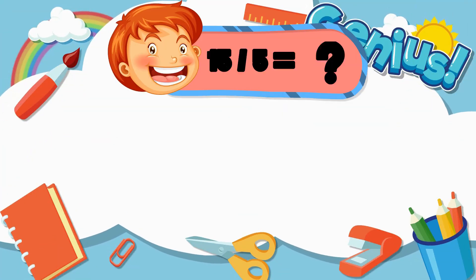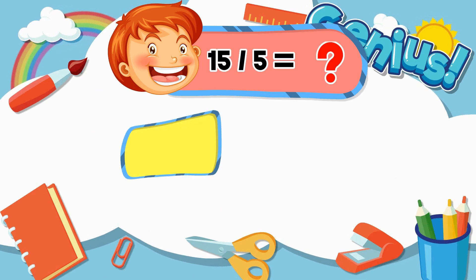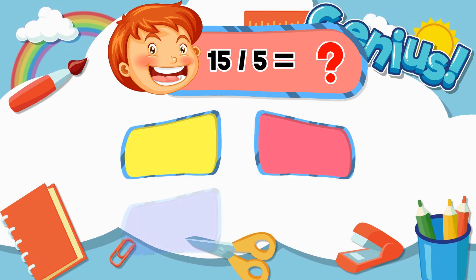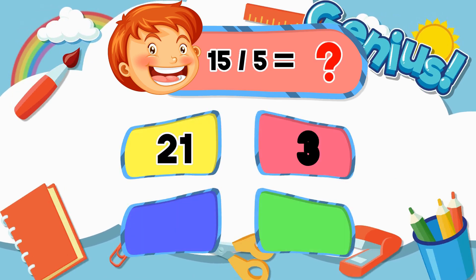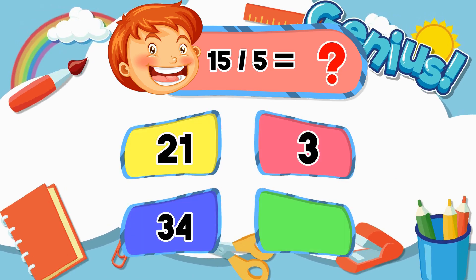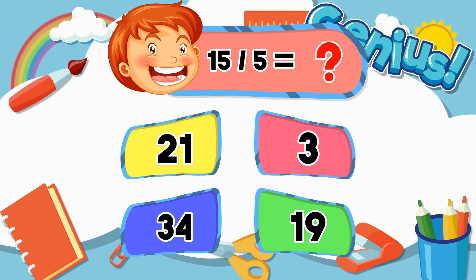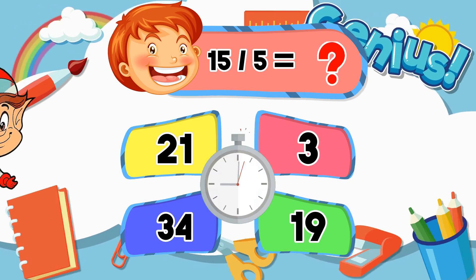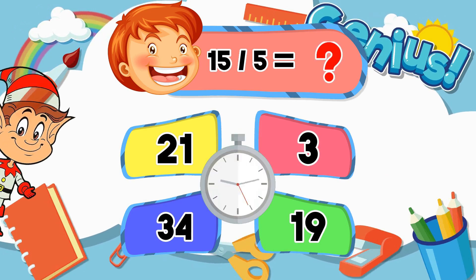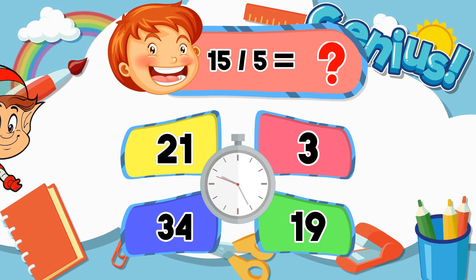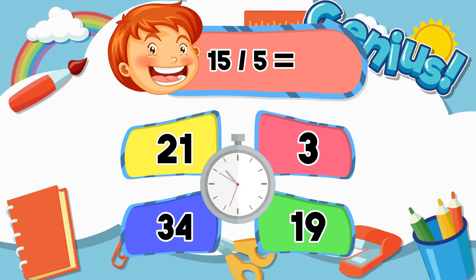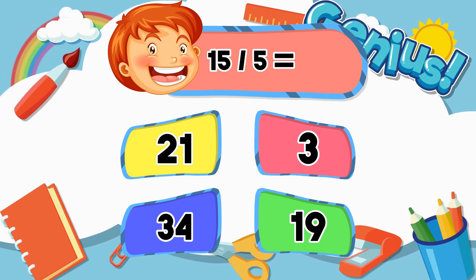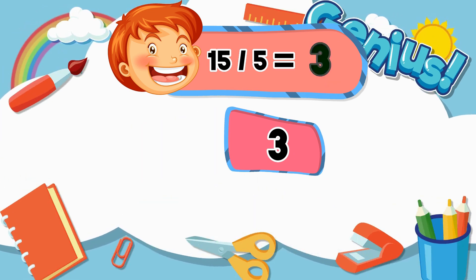What is 15 divided by 5? Options: 21, 3, 34, 19. Answer: 3.